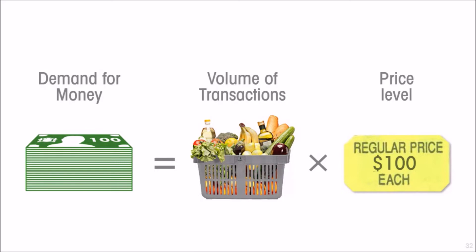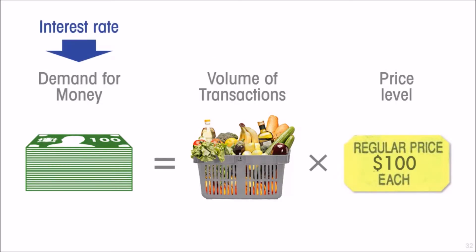If we scale this to the level of the national economy, we have a measure for the volume of transactions that take place in an economy, and that is tied to real GDP. What is produced is sold, so the amount of real GDP is one macroeconomic determinant of the demand for money.